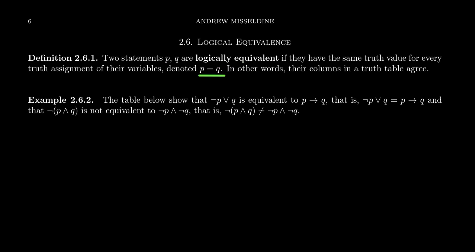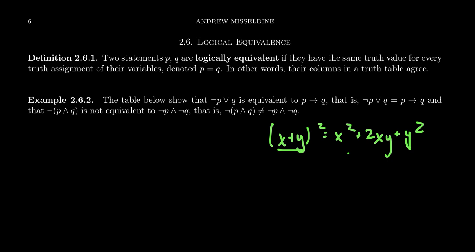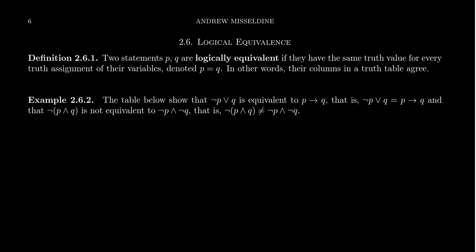We actually denote this with equality — we say the two statements are the same thing. This would be the same as saying x plus y squared is equal to x squared plus two xy plus y squared. In the algebraic sense, these two quantities are equal. They're not the same expression because I actually wrote two different things, but we mean that on every assignment of the variables, they're always going to be equal to each other. So logically equivalent statements, we really think of as equal statements.